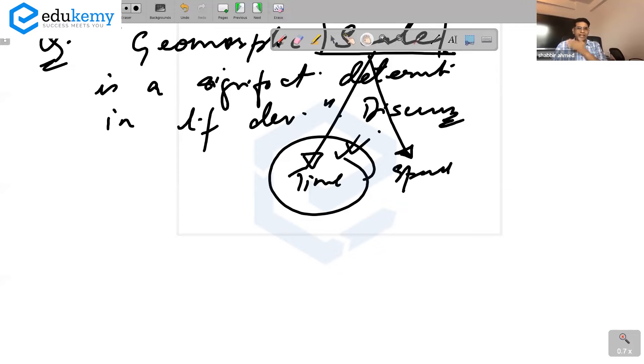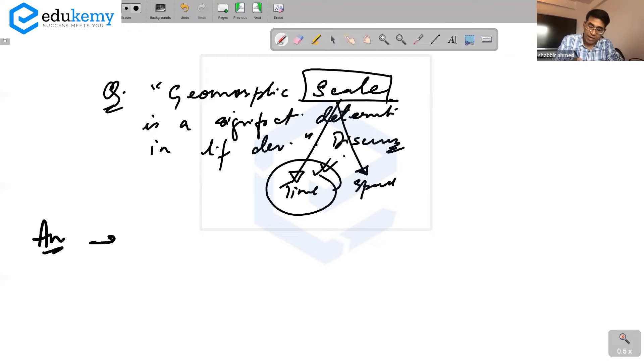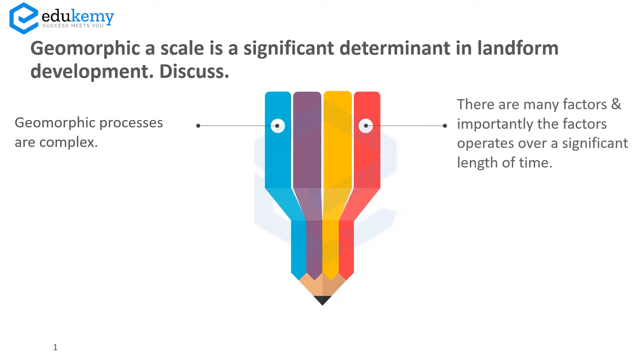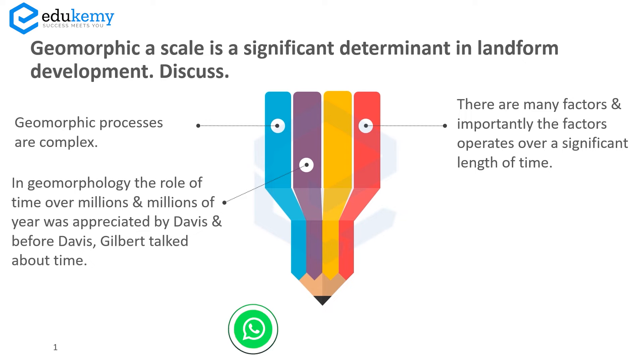These answers require some descriptive writing. You start by saying that geomorphic processes are complex, there are many factors, and importantly the factors operate over a significant length of time. In geomorphology, the role of time over millions and millions of years was appreciated by Davis.